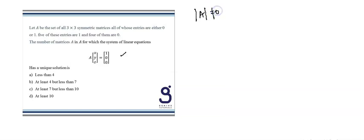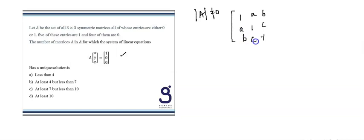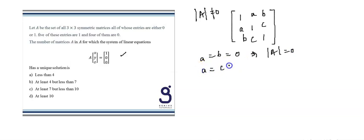Again we have two cases. If all diagonal elements are one, we write the matrix with off-diagonal entries a, b, c. If a = b = 0, the determinant is 0; if a = c = 0, determinant is 0; if b = c = 0, determinant is again 0. So if all diagonal elements are one, we cannot form a symmetric matrix with non-zero determinant. This case yields no valid matrices.